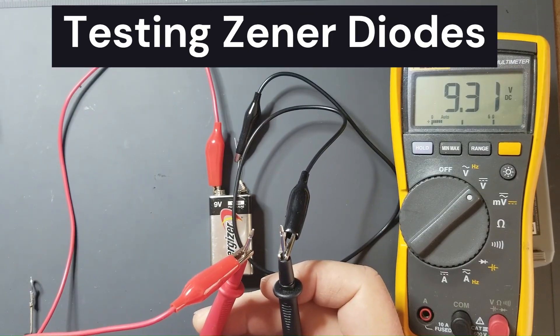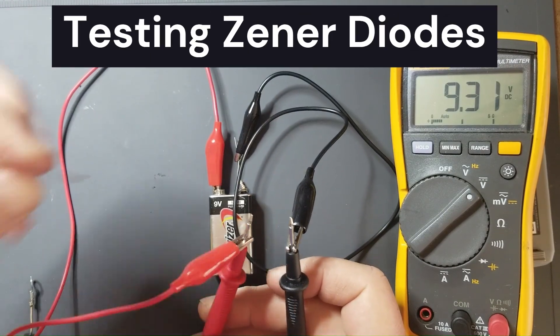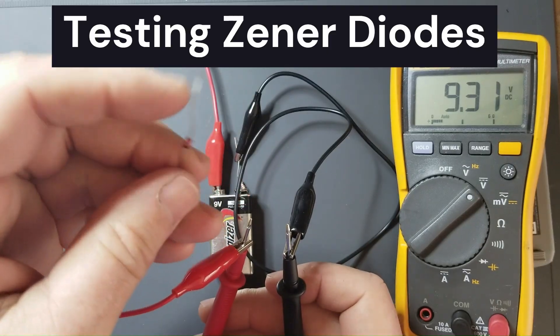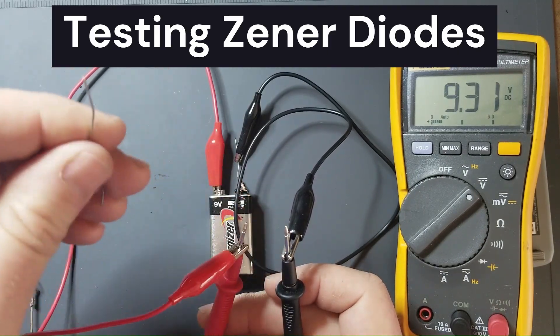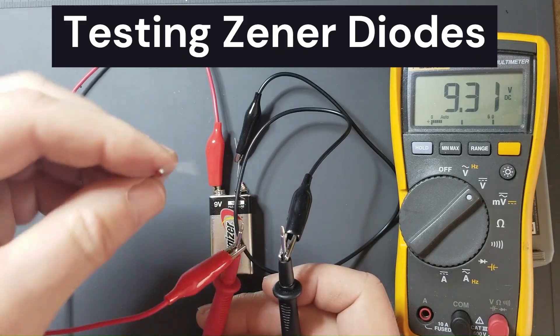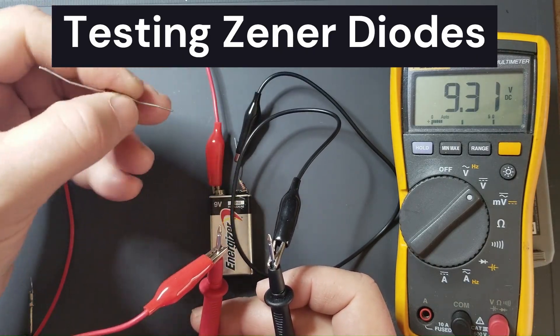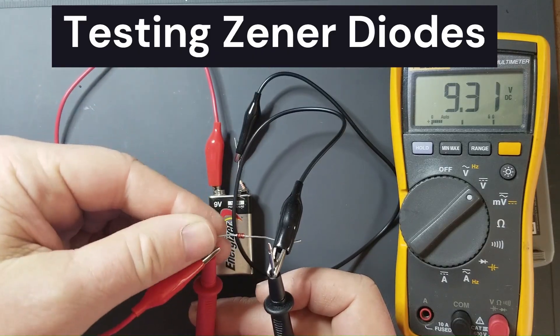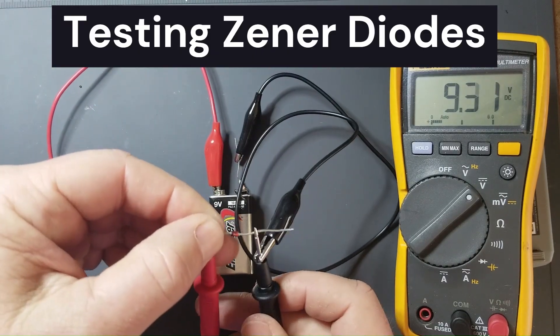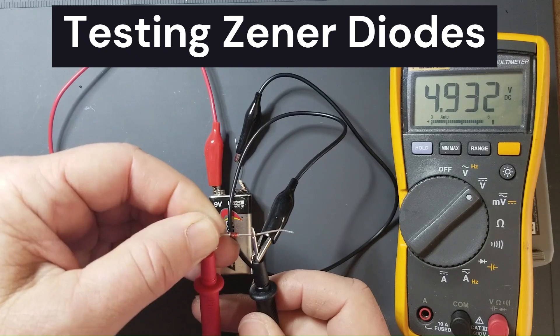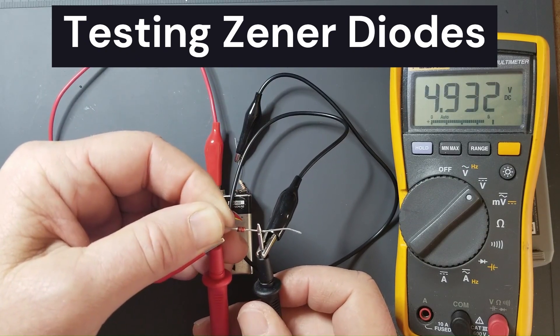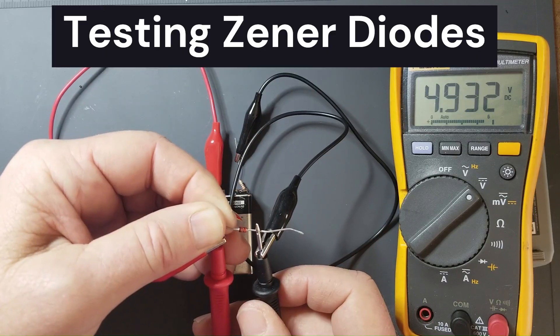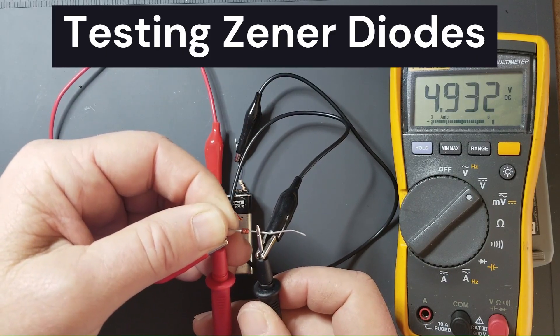Another thing you can do with this is test Zener diodes. Zener diodes have a reverse voltage drop that is of a known value and are commonly used for voltage regulation and for voltage references. For the Zener diodes you're going to hook up the banded side to the positive lead and the non-banded side to the negative lead. They're hooked up backwards. This one has a 4.9 volt drop so this is probably a 5 volt Zener diode.